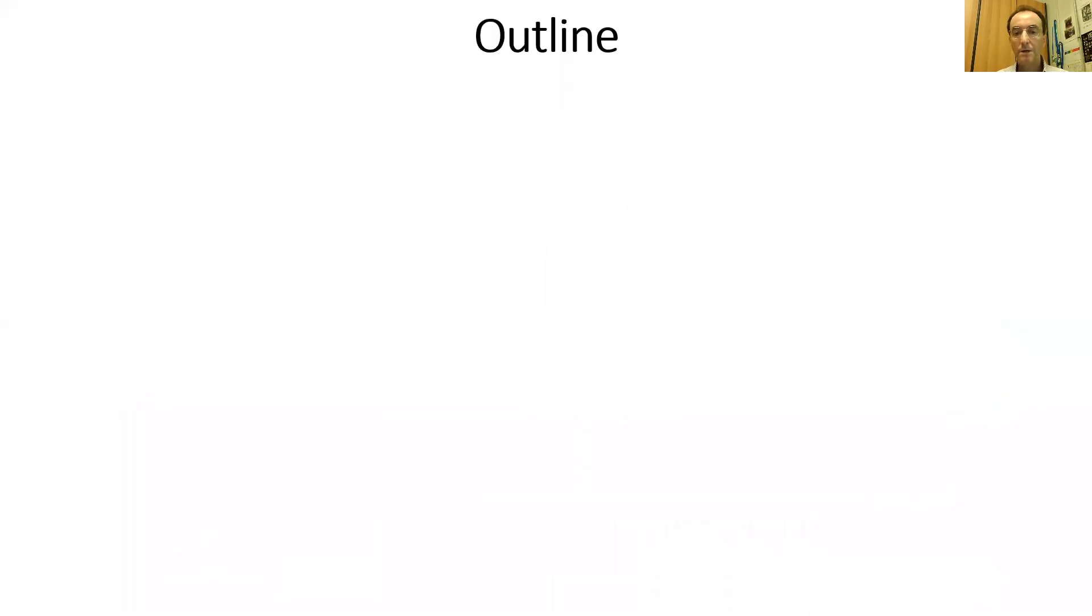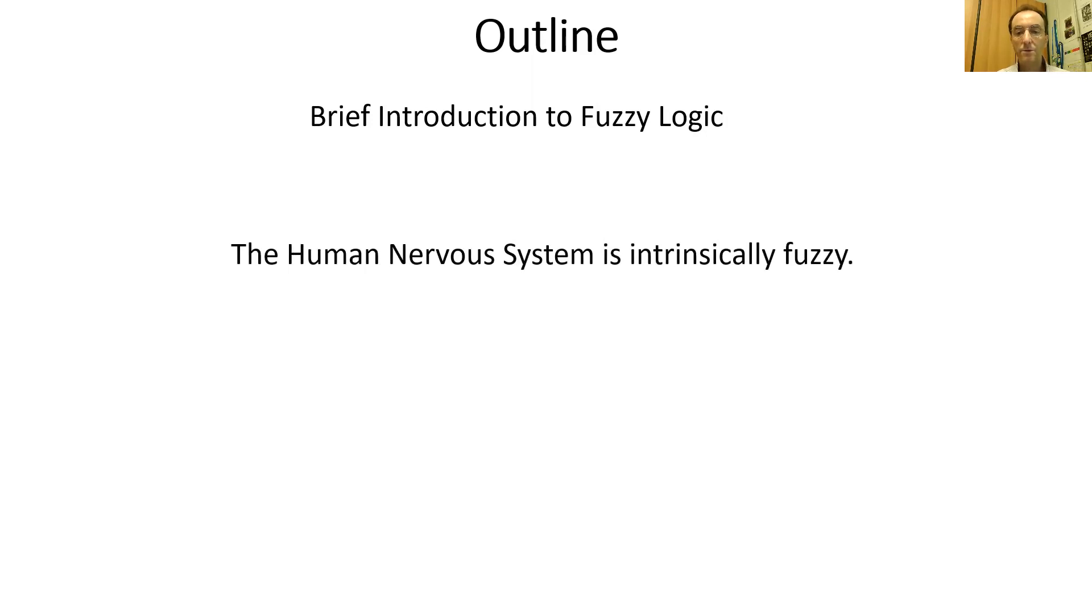The outline of my talk: First, I will introduce fuzzy logic, which is a good model of human capability to compute with words. I will show that this power of fuzzy logic partly comes from the fact that the human nervous system is intrinsically fuzzy. Then I will describe some strategies to process fuzzy logic information by molecules. Finally, I will conclude by presenting some perspectives.